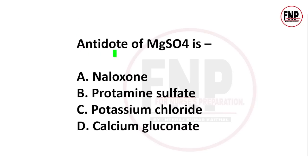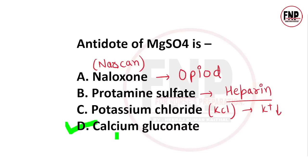Next question: Antidote of MgSO4. Pregnancy ke dauran pre-eclamptic mother ko eclampsia mein convert hone se rokne ke liye magnesium sulfate diya jata hai. Agar iski toxicity ho jaye, to antidote ke roop mein kise istemal kiya jata hai? Options: naloxone, protamine sulfate, potassium chloride, calcium gluconate. The right answer is option D, calcium gluconate. Magnesium sulfate ka antidote hota hai calcium gluconate.